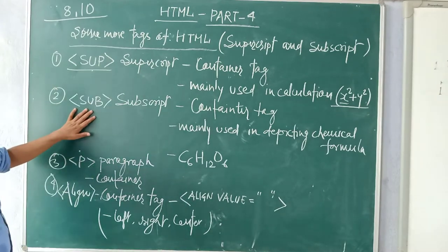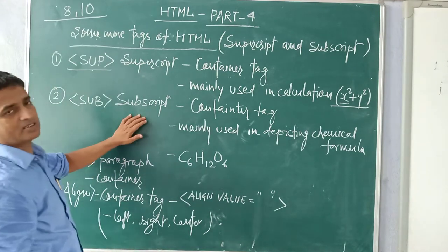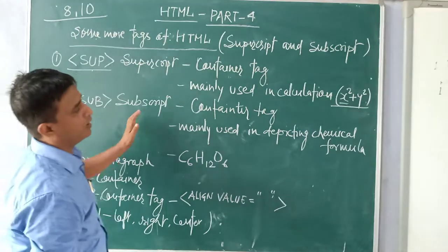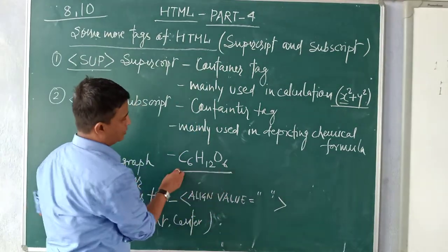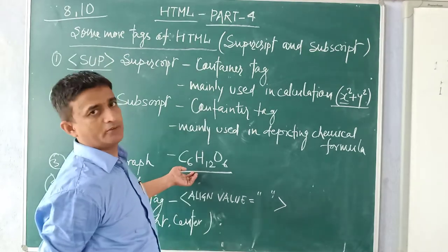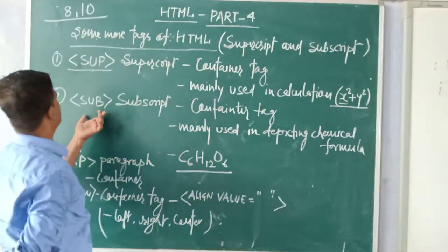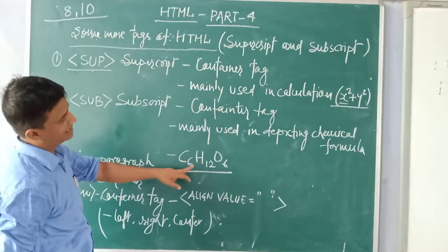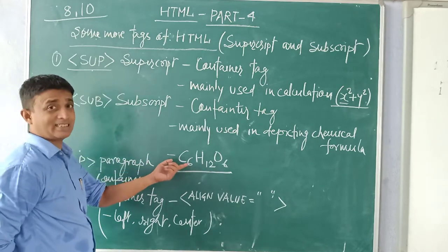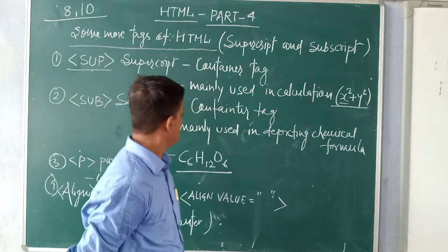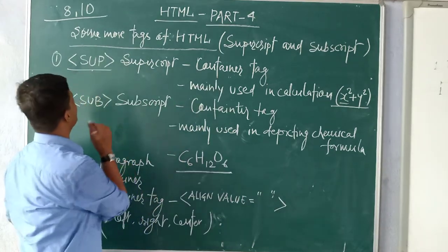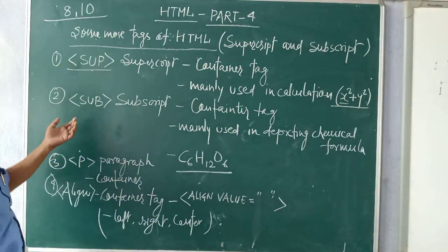Number two is subsub. This is for subscript. When you want to enter like this, this is the glucose formula into your website, then you will use this. Here you see C6H12O6. C6, where is 6? 6 is at the bottom of the C. So how to install these things? We will use the superscript.